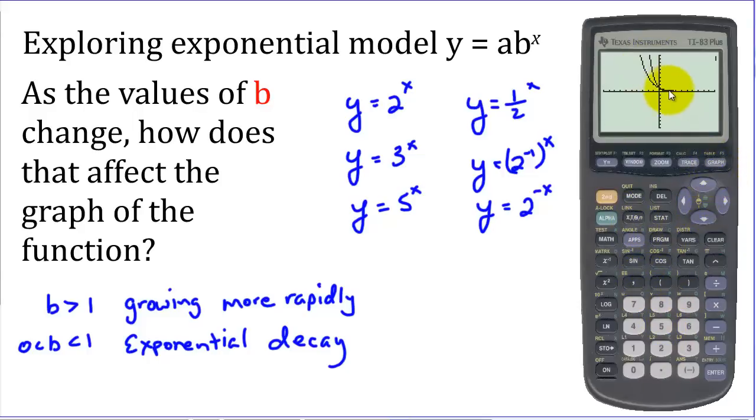We can see as before it decreases more rapidly. Now b and these exponential functions will never be a negative number. A negative number raised to a power behaves very radically. So on our exponential models, b will always be a positive number. a could be positive or negative. Remember when a is negative, it flips the curve around the x-axis.